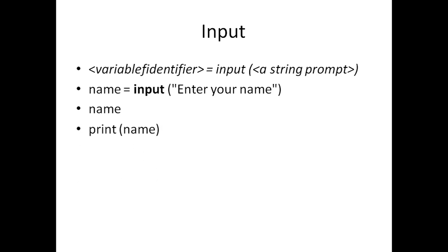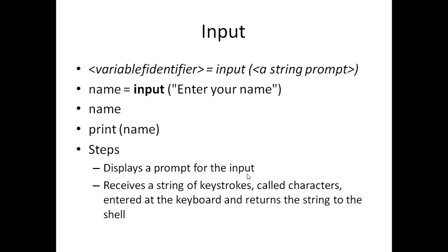You can then print this name using the print function. The steps involved are: display a prompt for the input, receive a string of keystrokes for characters entered at the keyboard, and return a string to the shell. We will see this with an example.